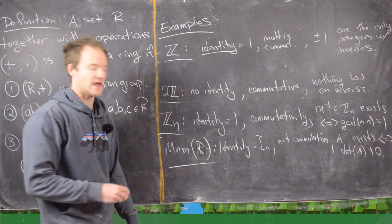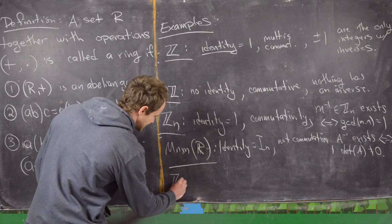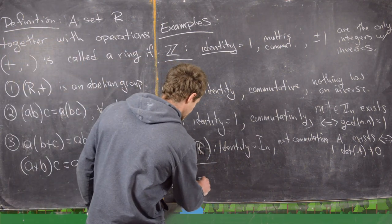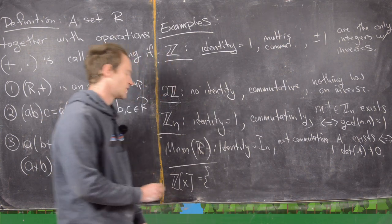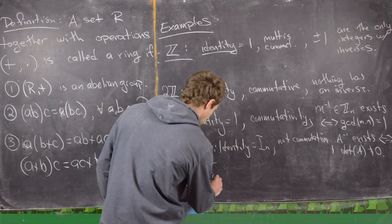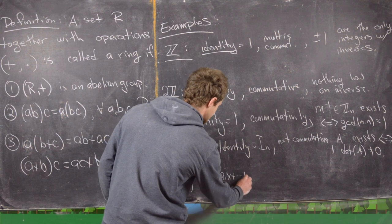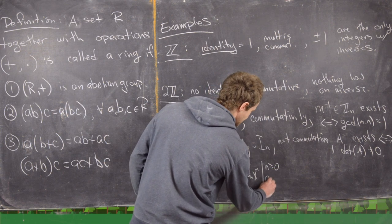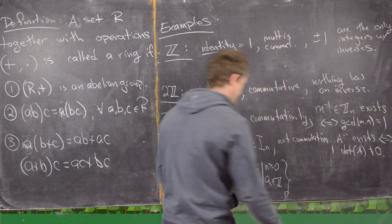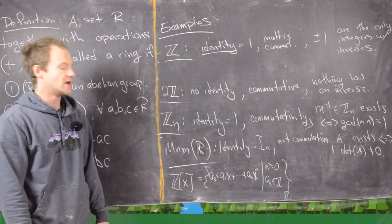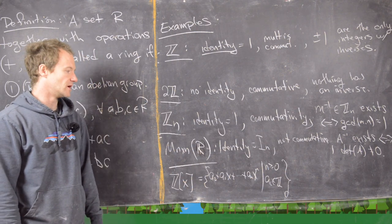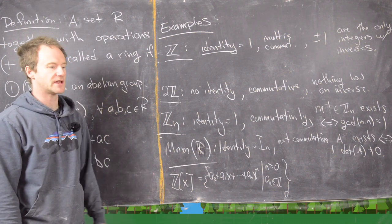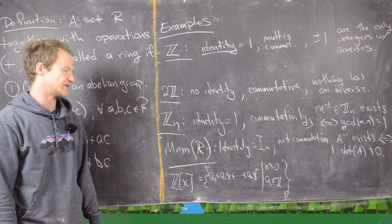So I want to look at one more before the end of this video. And that would maybe be Z adjoin x. So what that's going to be is all polynomials with integer coefficients. So this is going to be a0 plus a1 x plus an x to the n. And here I should say that n is bigger than or equal to zero. And these ai's are in Z. And really you can take this to be any ring here. So any ring adjoin x is also a new ring. So this is a nice way of taking an old ring and forming a new ring just by looking at polynomials with coefficients in that old ring.